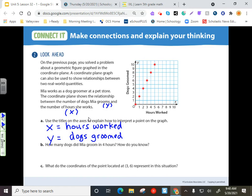B, how many dogs did Mia groom in four hours? How do you know? This is where we can use this coordinate plane as a tool. Let's go over to four for four hours right here. And if we go straight up, this will stop at how many dogs she groomed. So, she groomed eight dogs in those four hours.